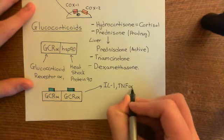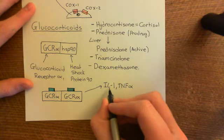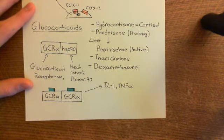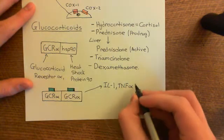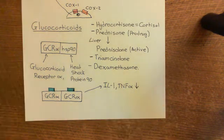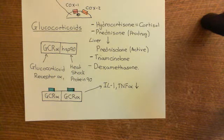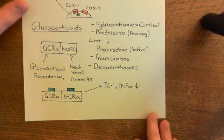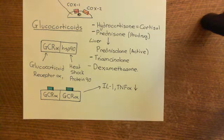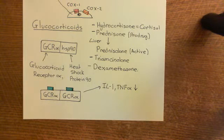The GCR-alpha dimer will bind to the promoter regions of the interleukin-1 gene and the tumor necrosis factor alpha gene, acting as a transcriptional repressor for these two proteins. This is important in the initial sentinel cells — the resident macrophages and dendritic cells. If you stop or at least reduce production of interleukin-1 and tumor necrosis factor alpha, you're going to hugely reduce type 2 activation, and if you don't get that increased vigor of type 2 activation, your acute inflammatory response will be hugely reduced.